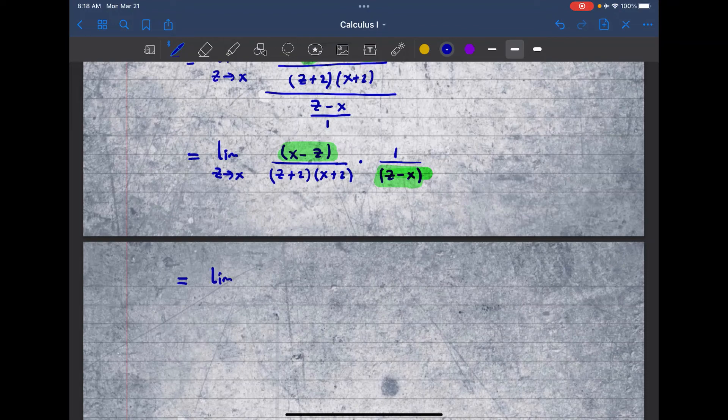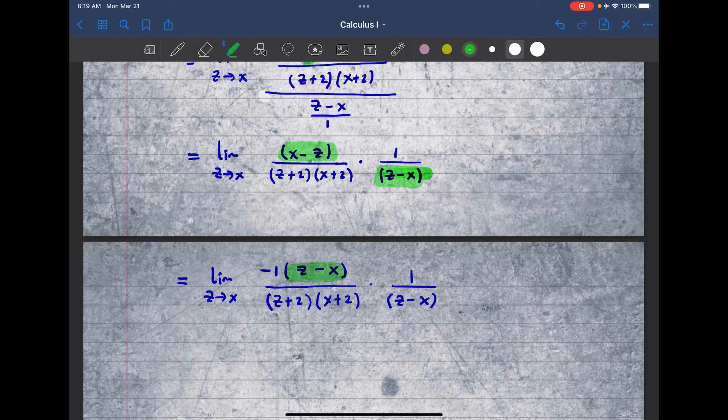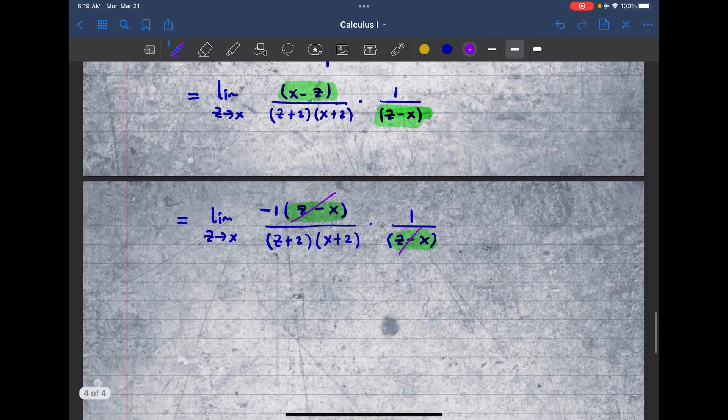So you'll have the limit as z approaches x. I'm going to pull out a negative 1 from top. Then that gives me z minus x. And then all over I have z plus 2 and then x plus 2 times 1 over z minus x. Now you see how these two now look exactly the same. Now you can cancel them and then you'll have your final limit to take.